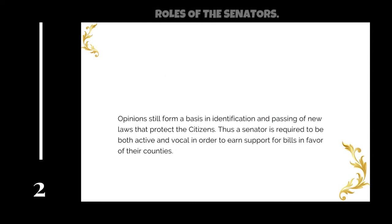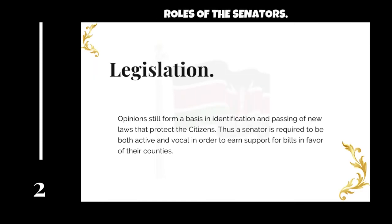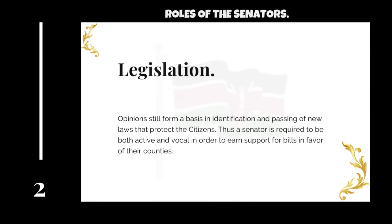The second role of a senator is legislation. Citizen opinions still form a basis in this role, which involves the identification and passing of new laws that protect the citizens. A senator is required to be both active and vocal in order to present bills in favor of their counties. The main criterion in selecting a senator is that he or she should be active and vocal, confidently airing the opinions of the county they represent, and advocating for laws that will protect the citizens.